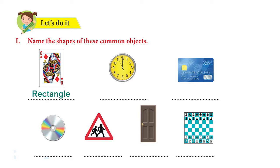The next one is a wall clock. What shape is that? It is a circle. You're correct. The third one is a credit card. What shape is that? It's a rectangle again. And here we have a CD. That's a circle. You're right.